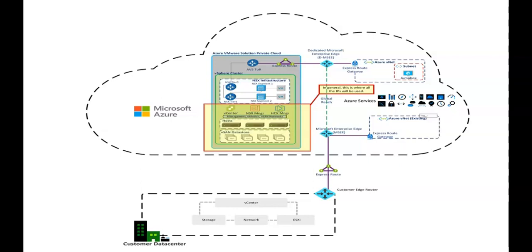When specifying whether to extend networks, we can extend network segments from on-premises to Azure VMware Solution. If we do extend network segments, the networks must connect to a vSphere Distributed Switch in the on-premise VMware environment. Networks on vSphere Standard Switch cannot be extended. These are the key highlights to review before selecting the options to deploy Azure VMware Solution. I hope you liked this video — if you have any queries, please mention them in the comment section and I'll see you in the next video.